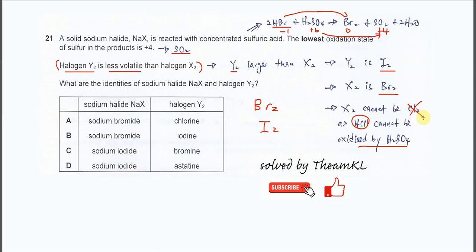If X₂ is not chlorine, then it should be bromine. If X₂ is bromine, then Y₂ must be iodine. So we now know that halogen Y₂ is iodine and NaX is sodium bromide, NaBr. Therefore, the answer is B.